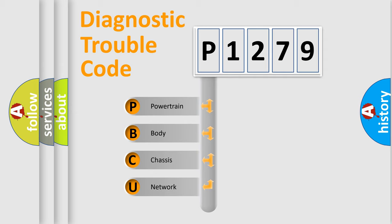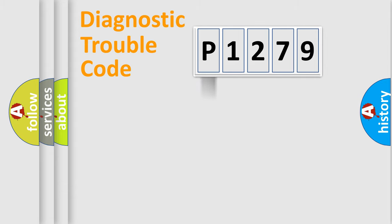We divide the electric system of the automobile into four basic units: Powertrain, Body, Chassis, and Network. This distribution is defined in the first character code.